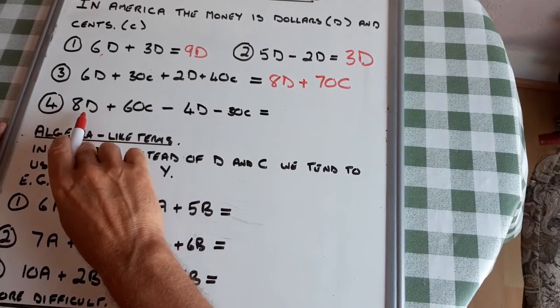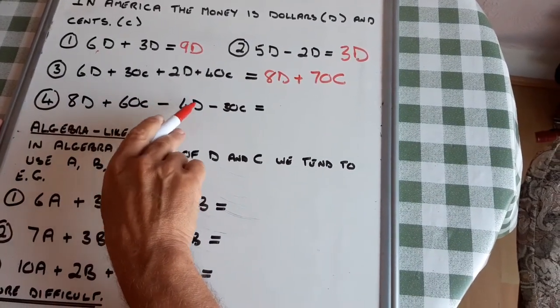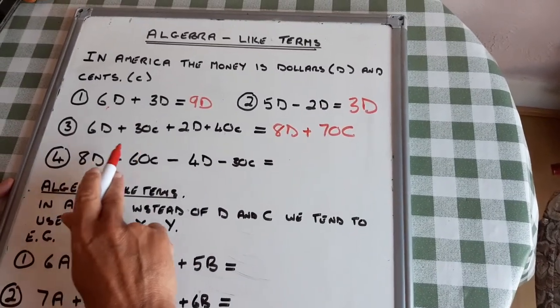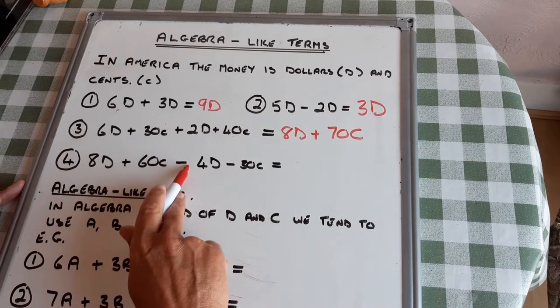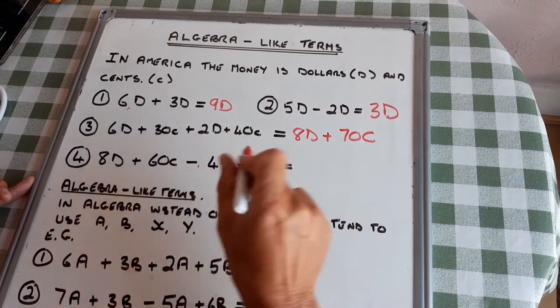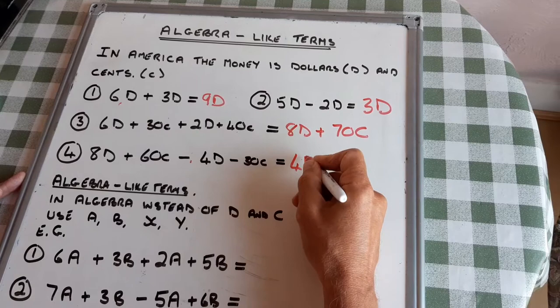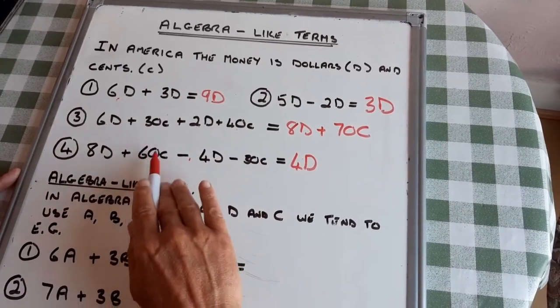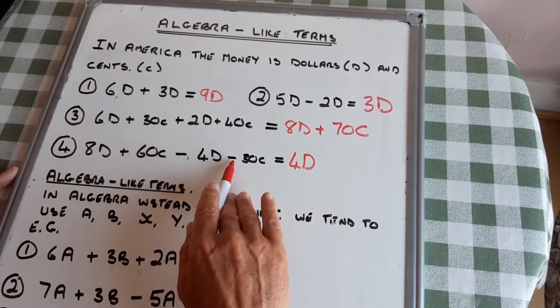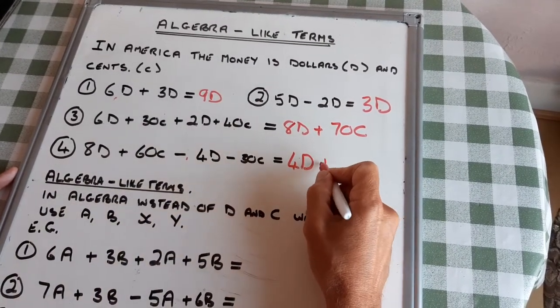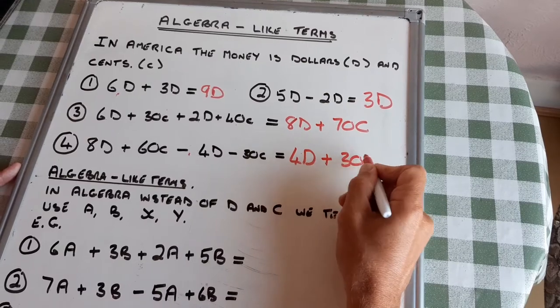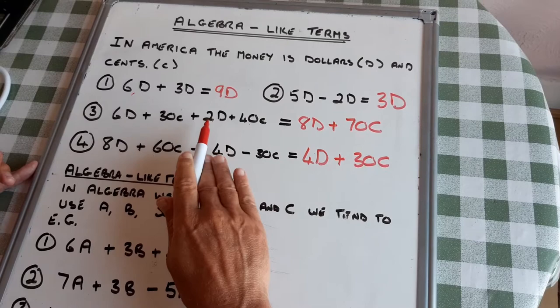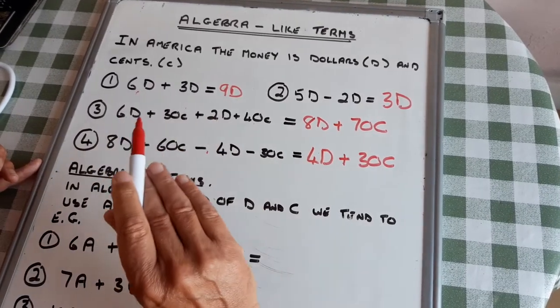This one, the signs have changed. I am subtracting, so I have eight dollars, and I lose four dollars, so I've got four dollars. I have sixty cents and I lose thirty cents, so I've got thirty cents. And that is basically algebra collected like terms.